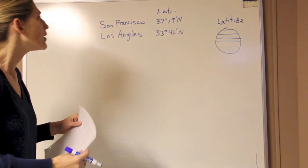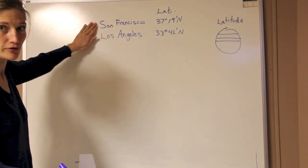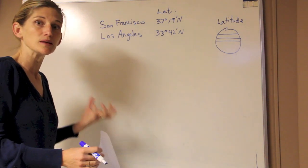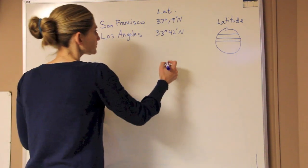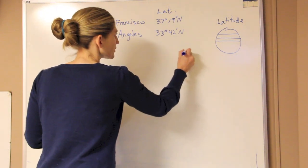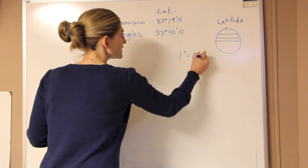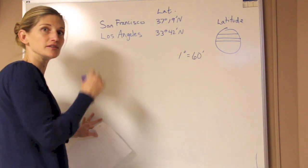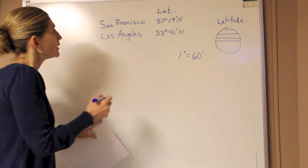So we want to know how much higher San Francisco is above Los Angeles, and we want to know that in degrees and minutes. Now one thing I want to point out is that when we look at one degree, there are 60 minutes, that's just that one little hash mark in every degree of latitude.